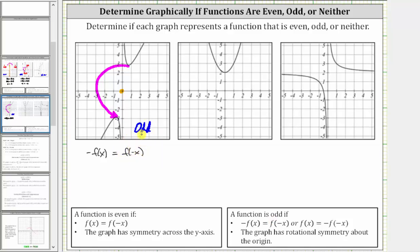Let's test this for x equals one. When x equals one, the corresponding point on the graph is the ordered pair one comma three. So substituting one for x, we have the opposite of f of one equals f of negative one. Using the ordered pair one comma three, we know f of one equals three, so the left side is the opposite of three, or negative three. When x equals negative one, the point on the graph is negative one comma negative three, so f of negative one equals negative three. Negative three equals negative three is true, verifying the equation.